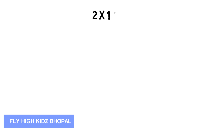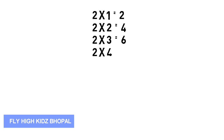Let's start again. 2 1's are 2, 2 2's are 4, 2 3's are 6, 2 4's are 8, 2 5's are 10, 2 6's are 12.